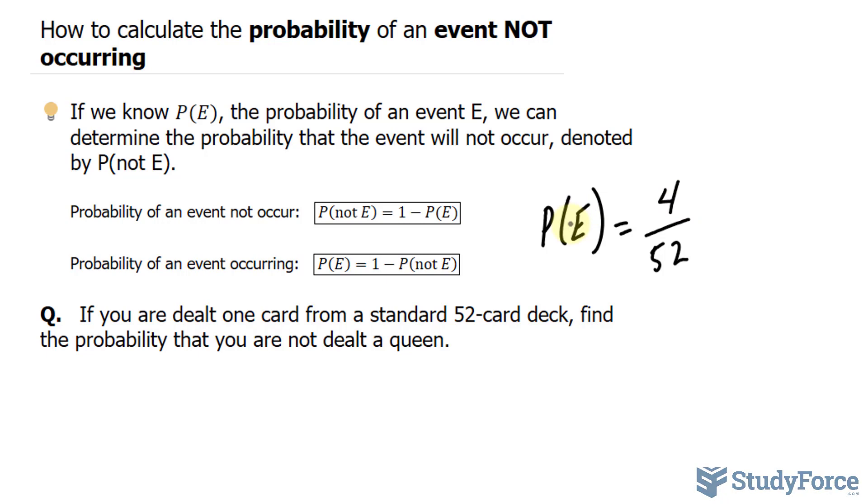Now, we want to find the probability of that not occurring. All we have to do is subtract, and I'll write that down as P(queen not occurring) is equal to 1 minus 4 over 52.